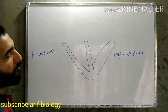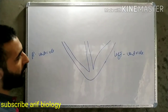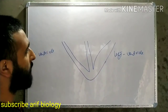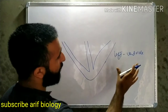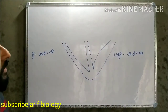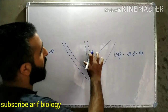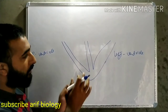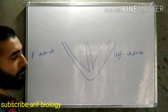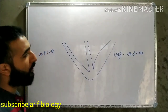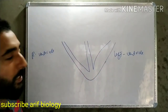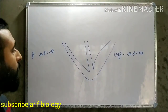Now this is the left ventricle and this is the right ventricle, but the left ventricle has thicker walls compared to the right ventricle. This is because this side has oxygenated blood, and this oxygenated blood has to be pumped all over the body. So these walls are a little thicker than the right ventricle.